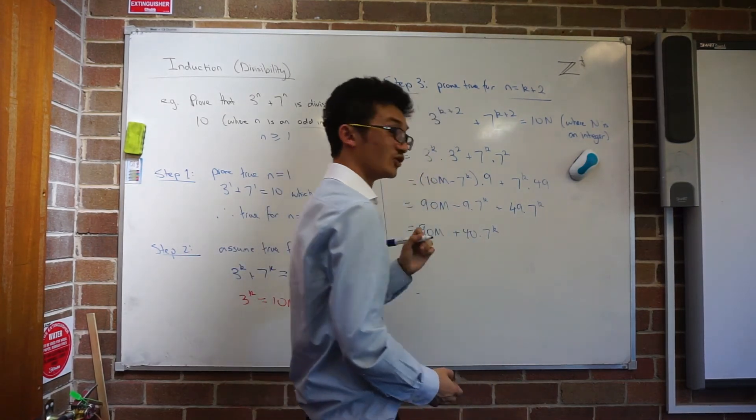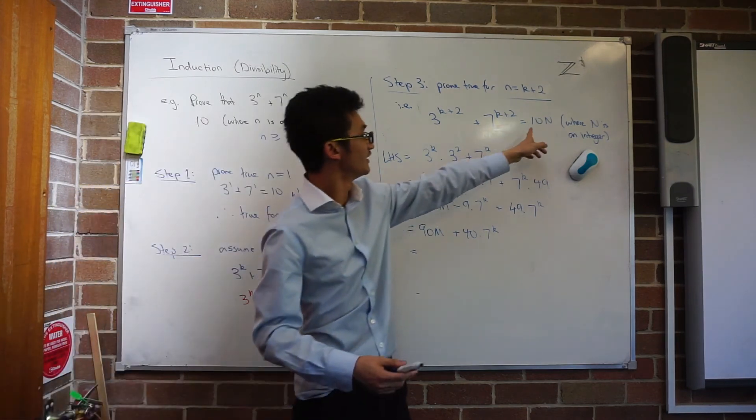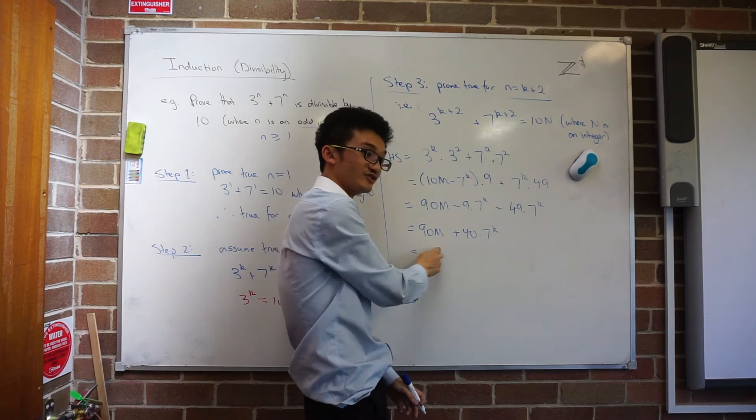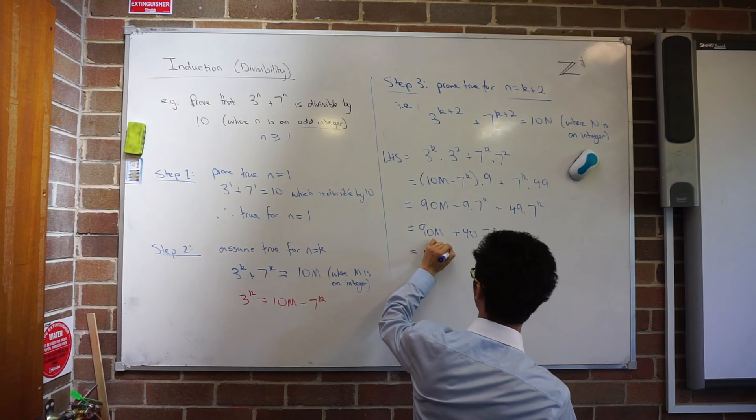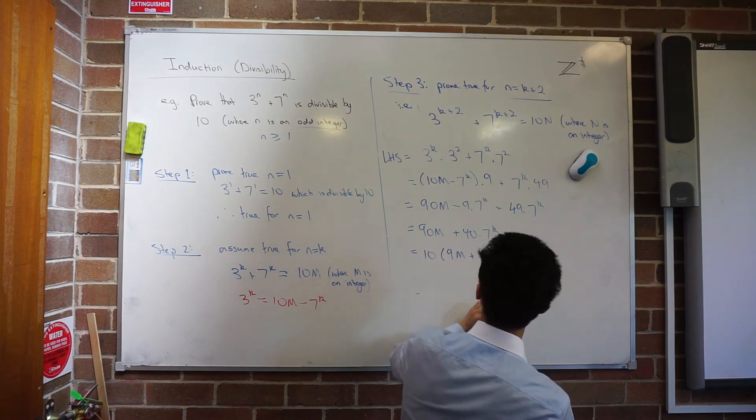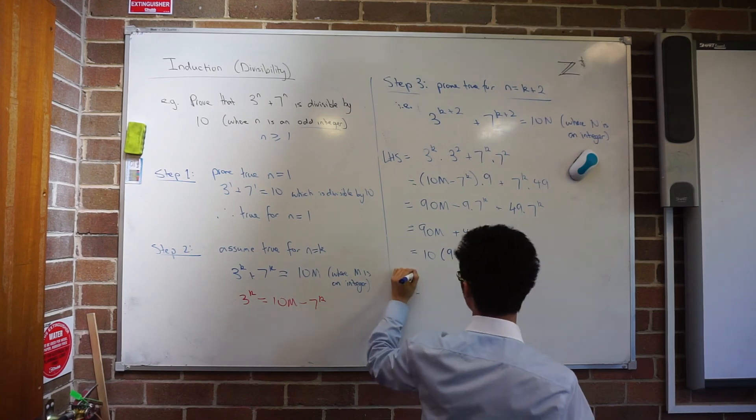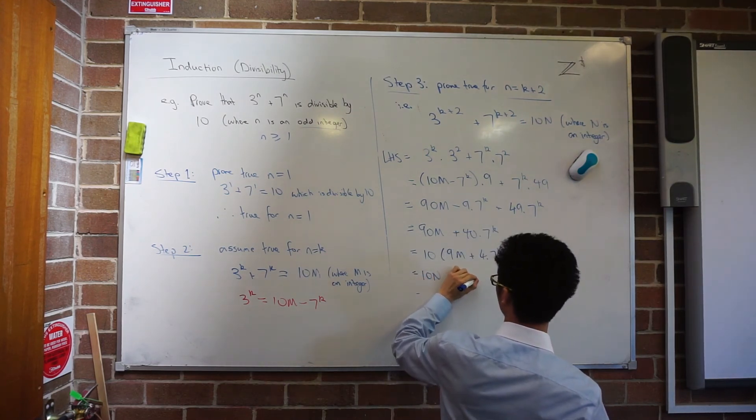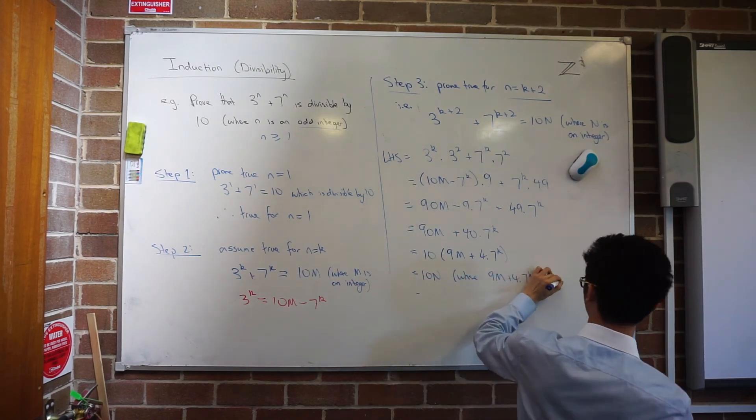And then, good. Don't forget the goal of what you're trying to do. I'm trying to find, up here, 10 lots of some integer. And I can see that I've got these values here, which both are a common factor of 10. I can take that out. 10 outside of 9m plus, in brackets, 4 times 7 to the power k. Well done. Equals 10n, where 9m plus 4 times 7 to the power k is integer.